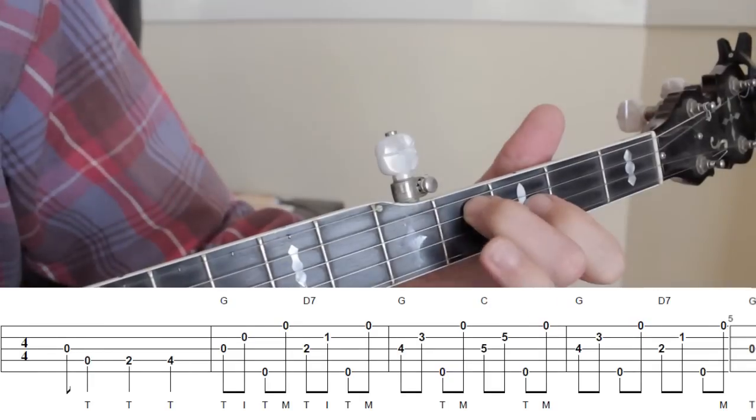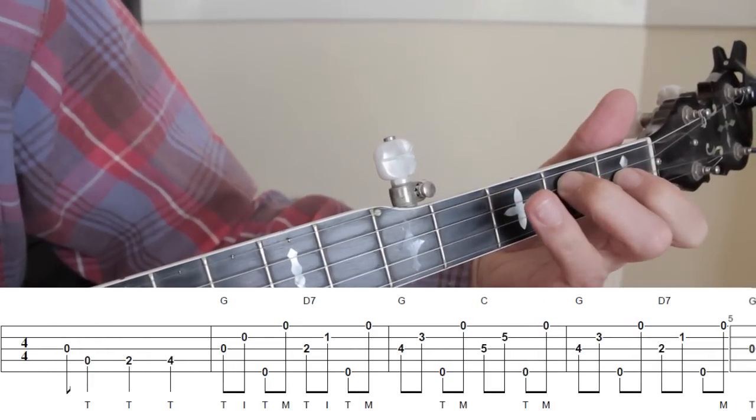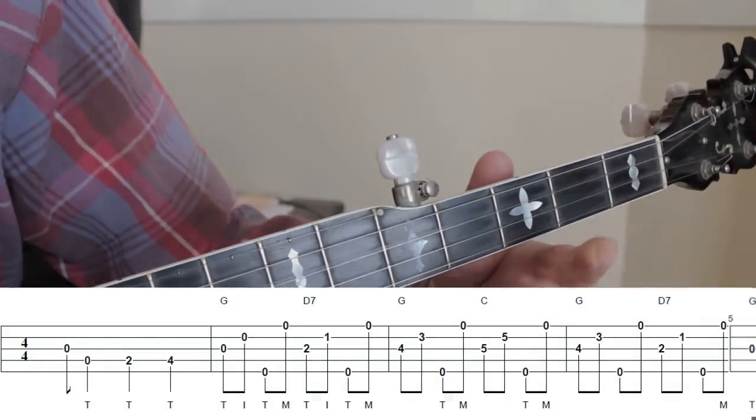Bar 4 sees the D7 shape being utilized again, firstly at frets 3 and 4, then again at frets 1 and 2.